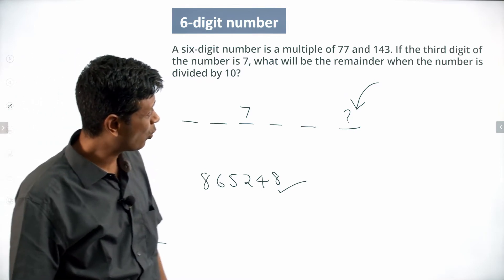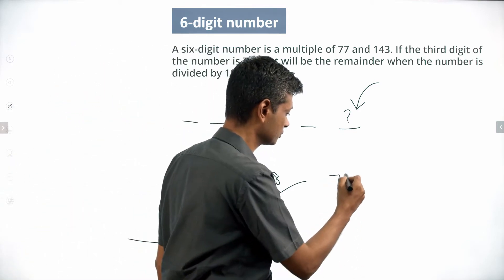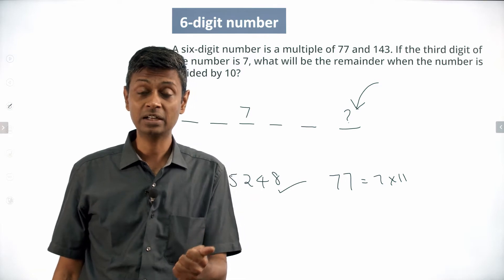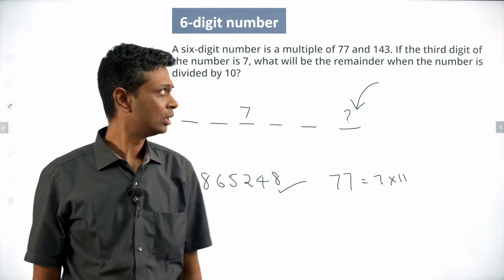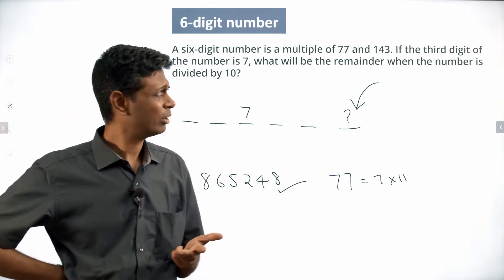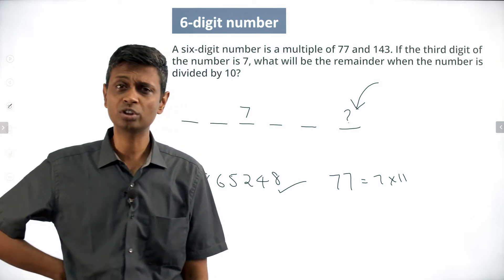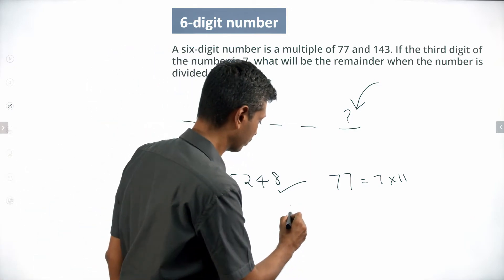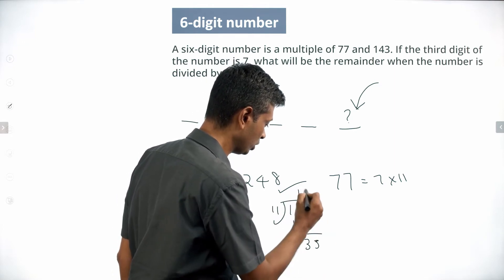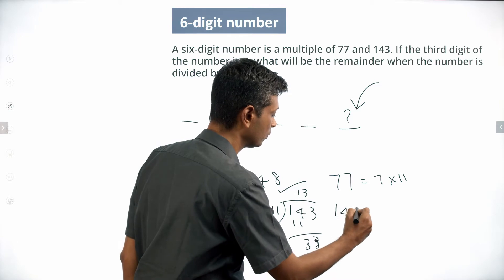Our number is a multiple of 77 and 143 — weird-sounding numbers, so let's dig deeper. 77 is 7 times 11, so our number is a multiple of 7 and 11. Now look at 143 — it's not a multiple of 2, 3, or 5. Is it a multiple of 7? 140 is a multiple of 7, so no. Is it a multiple of 11? Yes! 143 divided by 11 is 13. So 143 is 11 times 13.